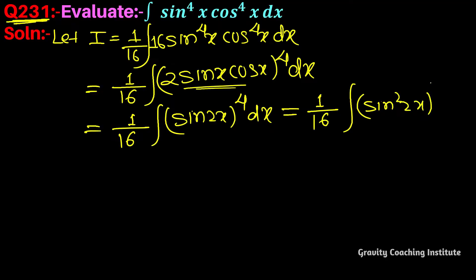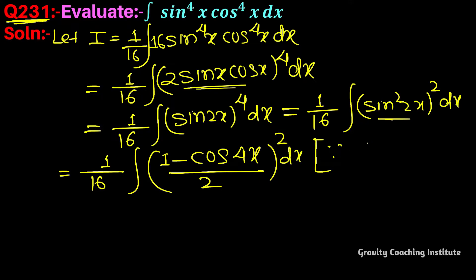Equal to 1 upon 16 into integration, this becomes 1 minus cos 4x upon 2 whole square dx. Since we know that sine square x equals formula 1 minus cos 2x upon 2, so we've replaced x with 2x, so this becomes 1 minus cos 4x by 2, and we will expand this.